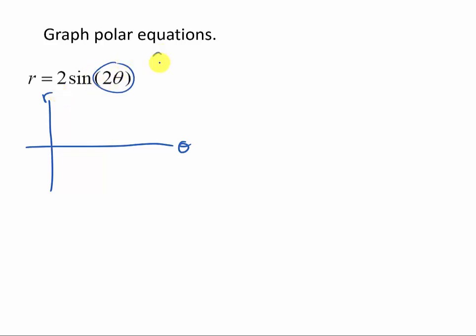So in looking at this, I see my period is 2 pi over 2, or pi, so I'm going to go 1, 2, 3, and the fourth one's going to be pi.